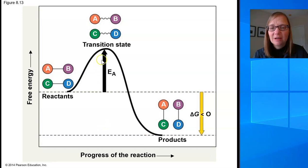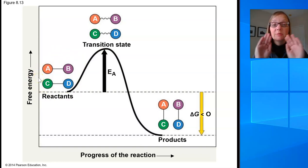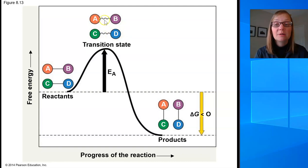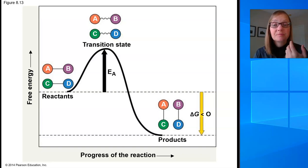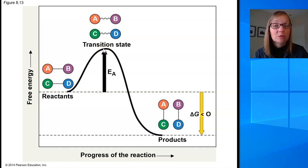What's new is this hump on the graph — this is the energy of activation. This is the amount of energy that the reactants need to absorb from their surroundings as thermal energy to reach a transition state, where the bonds in the original reactant molecules become strained. Those strained bonds are easier to break, and once they break, the reaction can continue to form the products.